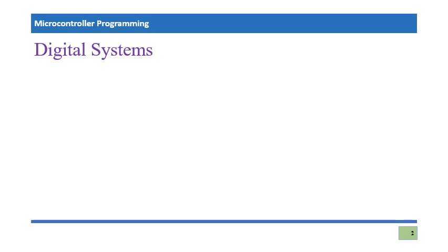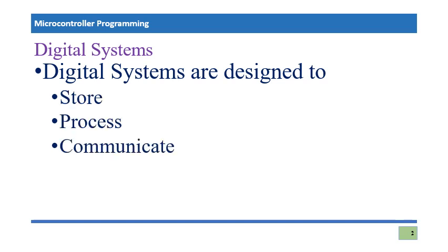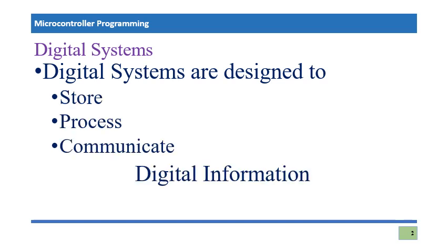So let's see what a digital system is. Digital systems are designed to store, process, or communicate digital information. Whenever you see a system which is dealing with digital information — either storing it, processing it, or responsible for communication of digital information — then you can be sure that you are dealing with a digital system.